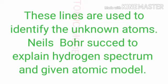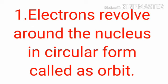Now, let us start Bohr's atomic model. First point is, electrons revolve around the nucleus in circular form called as orbit.